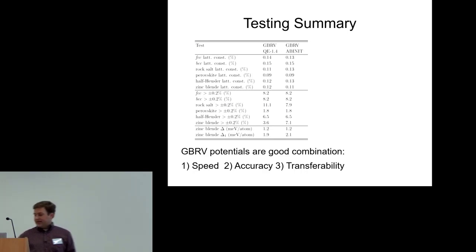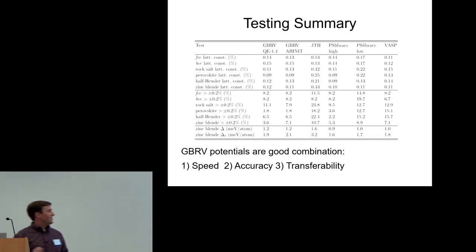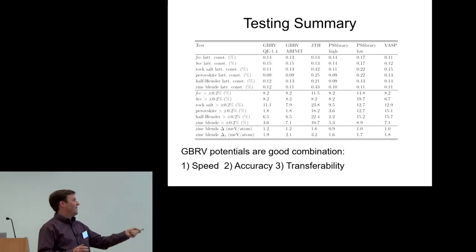This is what some of the other pseudo potential sets look like. The PSLIB high library, high accuracy library, is very accurate. The VASP PAWs are quite accurate. And some of the other ones, some of the older versions of these libraries struggled with some of the compounds.